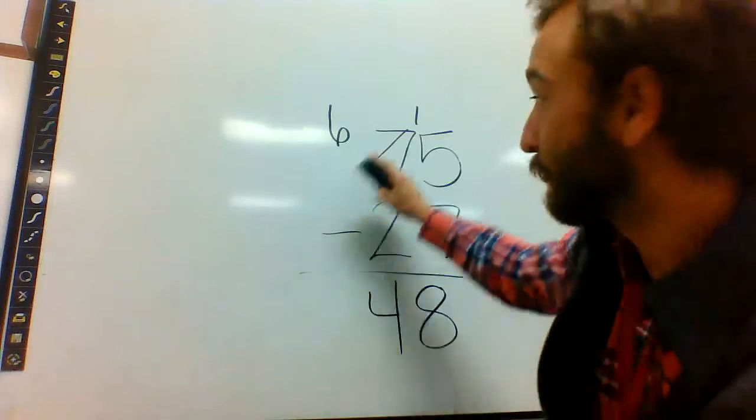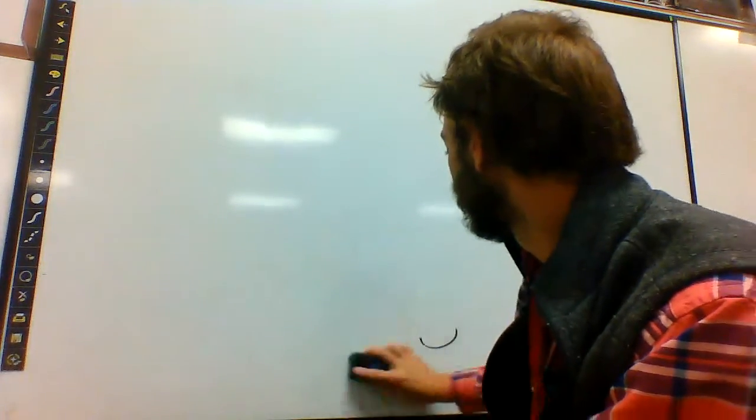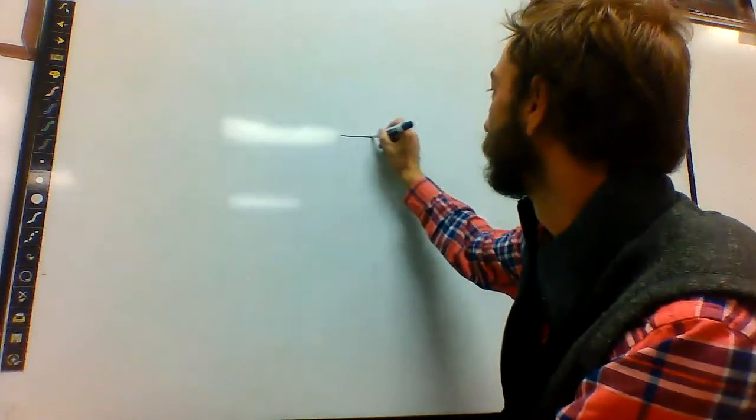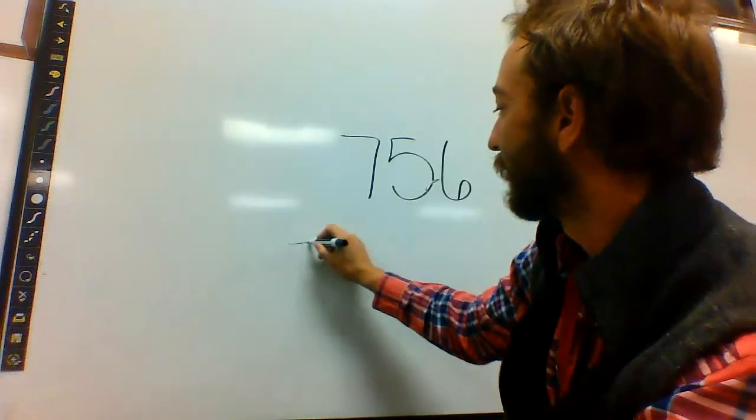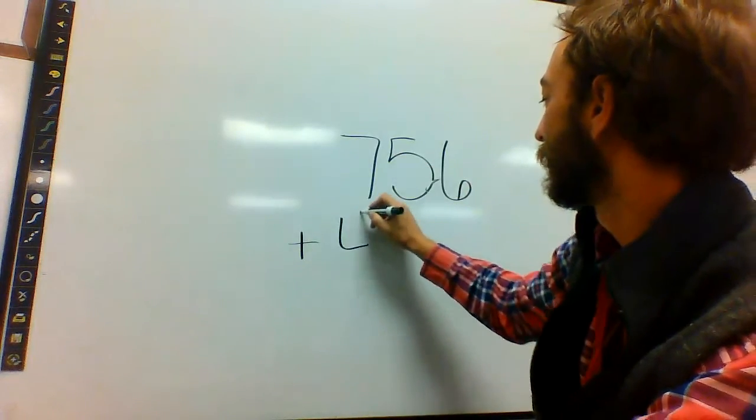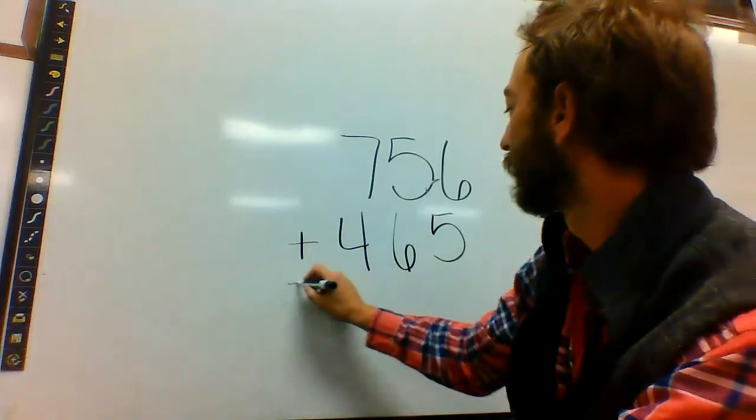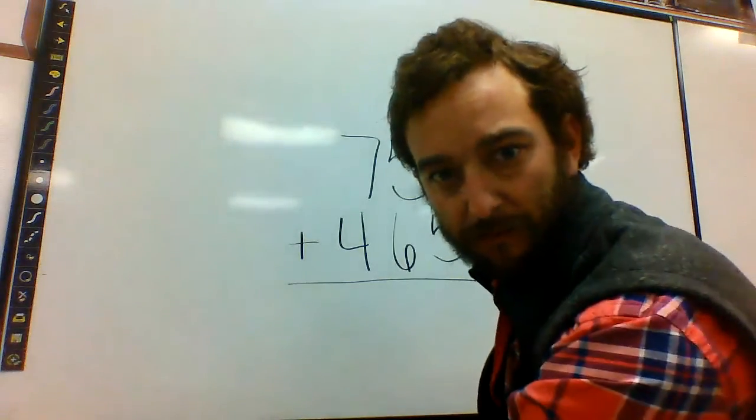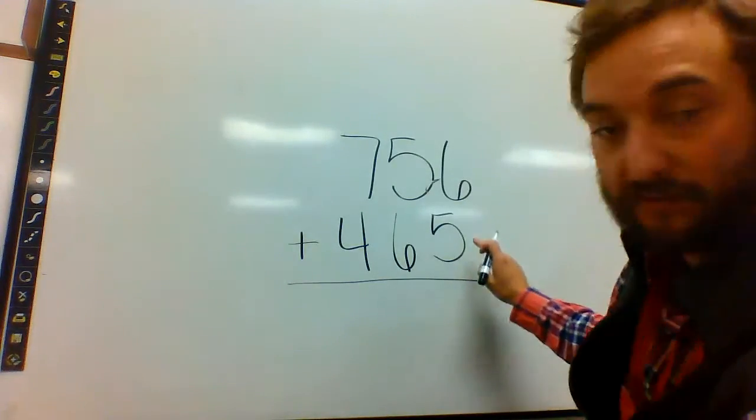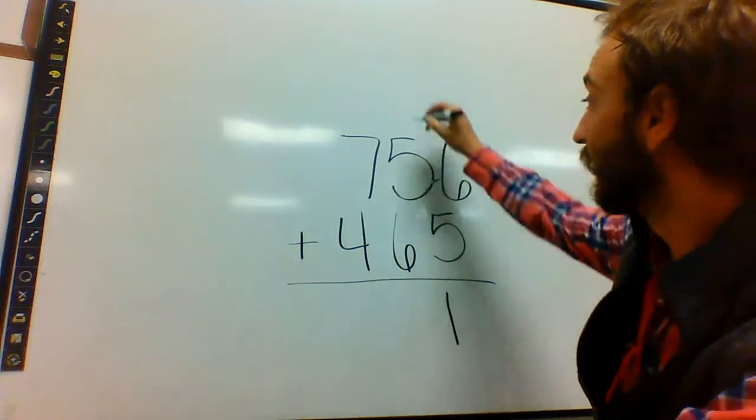Okay, let's try a couple triple digits. Make it a little trickier. Say we have 756 plus 465. Okay, start with your ones. 6 plus 5 is 11. Drop the ones. Carry the tens.